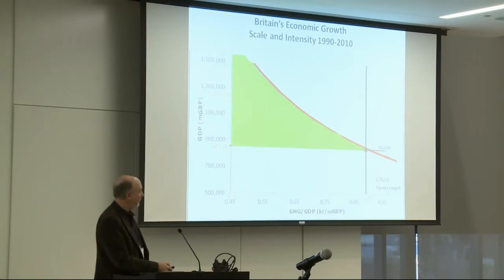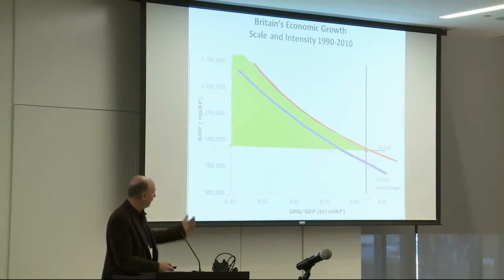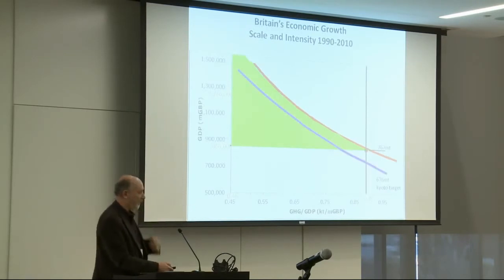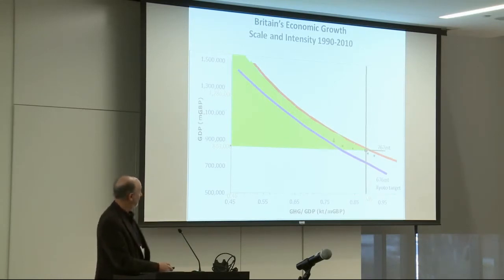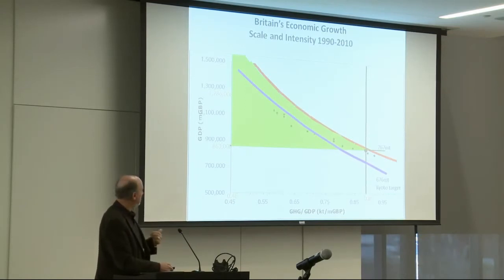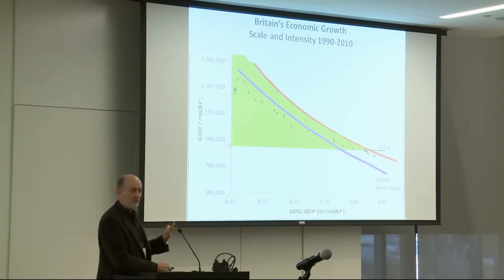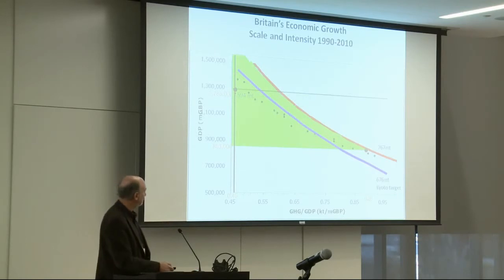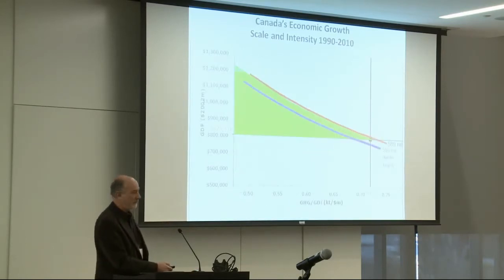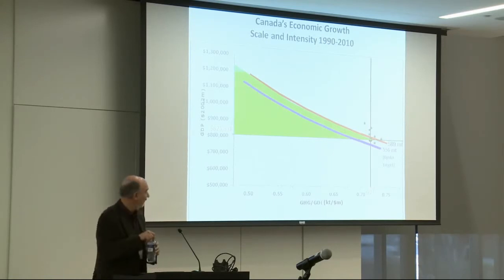Here's Britain. Britain had a Kyoto target — they said they'd get down onto that purple line. They managed to do it, sort of — they did it because they switched largely to gas, and secondly the structure of their imports changed as they started importing a lot of CO2-intensive products. Canada had a Kyoto target too, but we behaved rather like the Americans — in fact on a proportional basis quite a lot worse. So we can take 2010 as our starting point and ask: what would happen if we want to achieve a substantial reduction in greenhouse gas emissions — say 87% over 50 years?